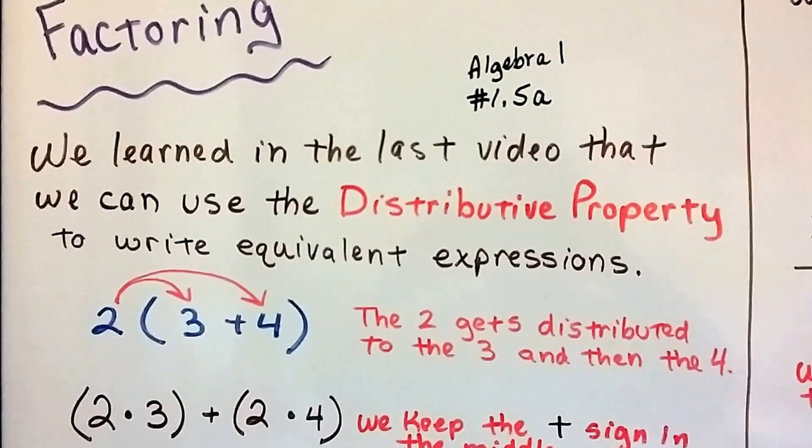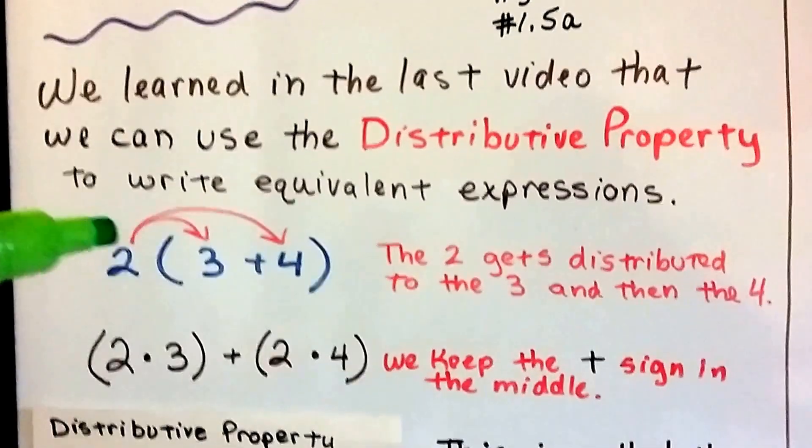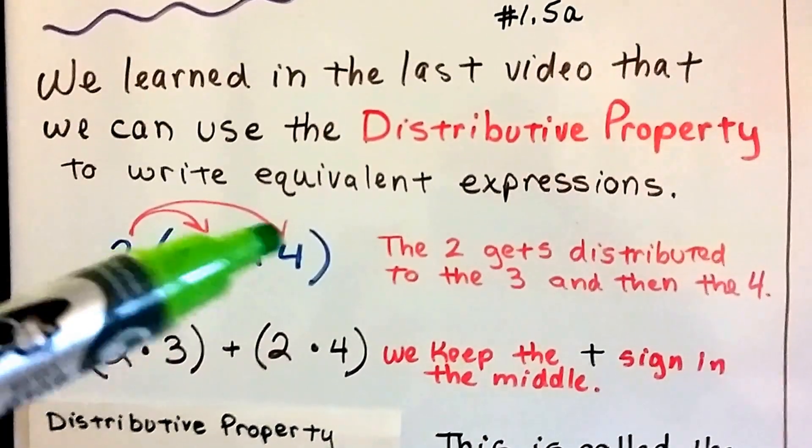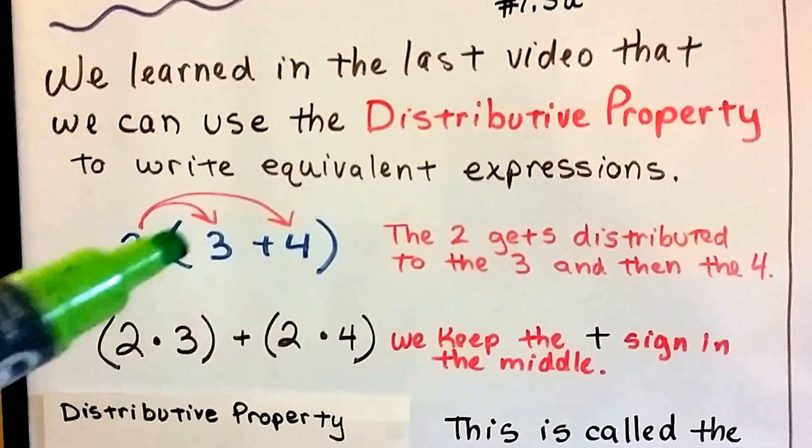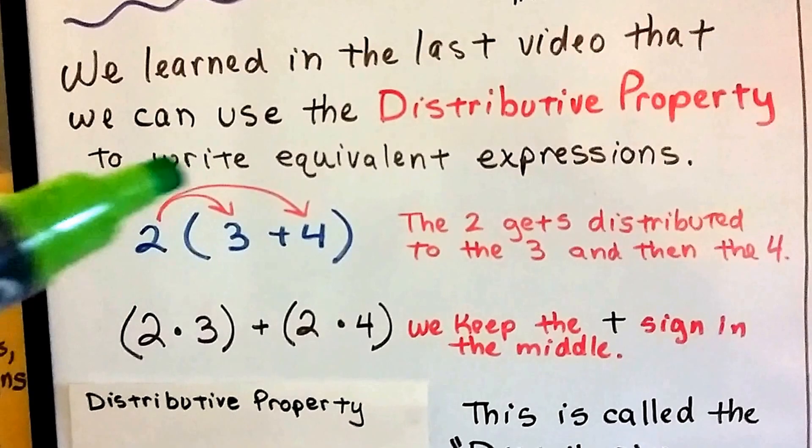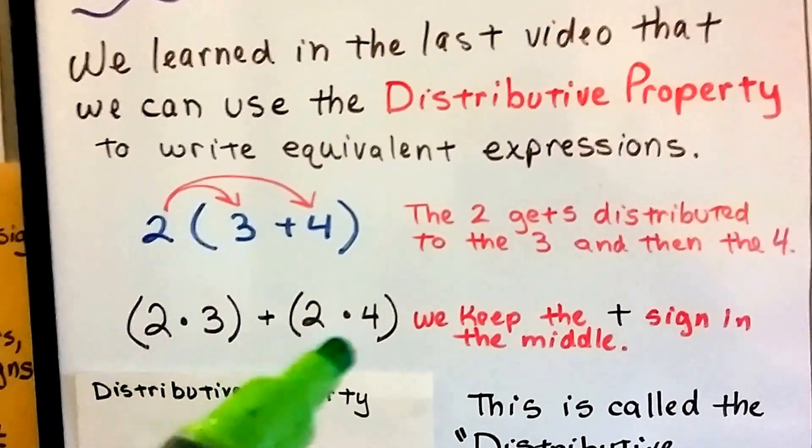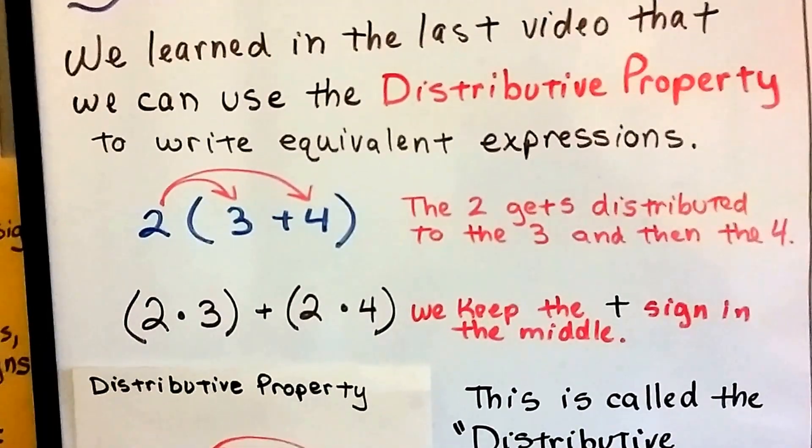We learned in the last video that we can use the distributive property to write equivalent expressions. When we see this, instead of just adding the 3 plus 4 inside the parentheses like order of operations tells us to, we can get rid of the parentheses by using the distributive property. We do 2 times 3 plus the 2 times 4. It comes out this way, and it would be the same answer as if we had done it the order of operations way.